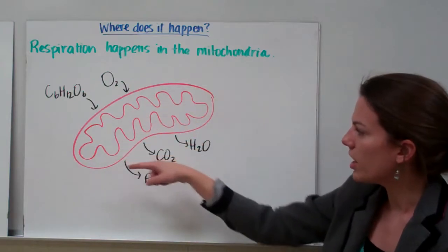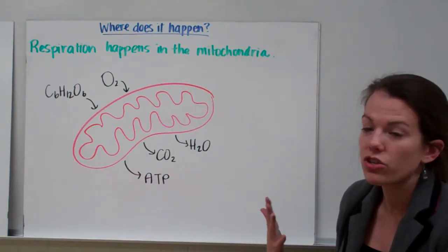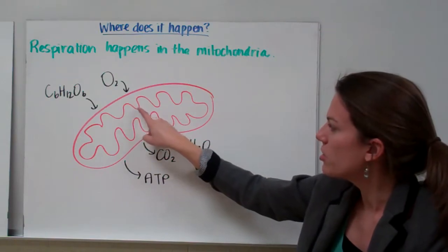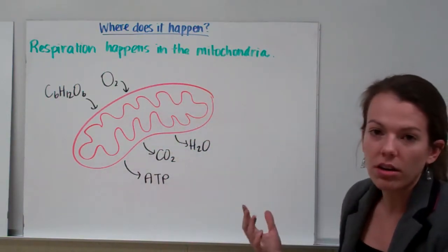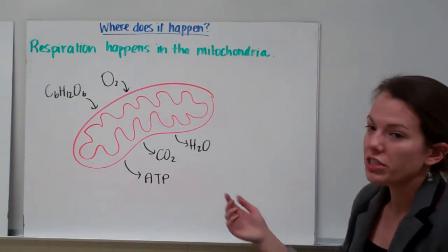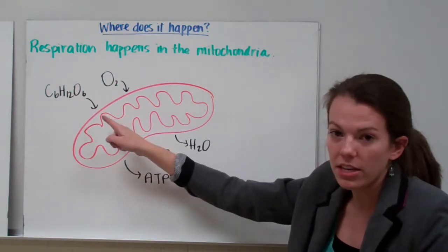If this is our mitochondria, remember you can recognize its structure because it has these squiggles. They kind of look like a bunch of squiggly M's all connected. Our mitochondria is going to take our sugar, C6H12O6,